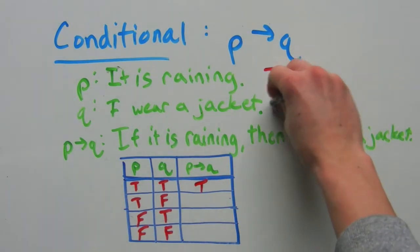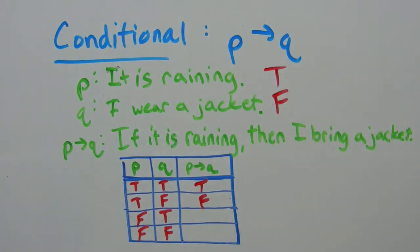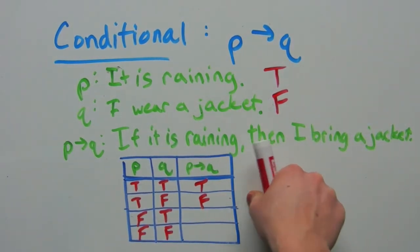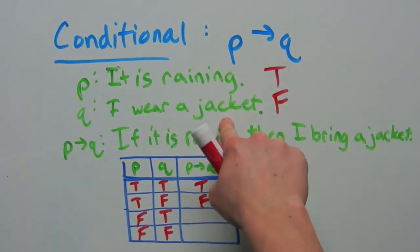If it's raining and I don't wear a jacket, then this conditional is false. That is because you cannot have a true hypothesis and a false conclusion.